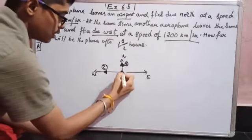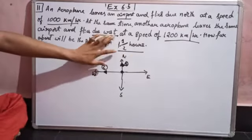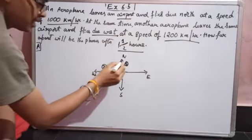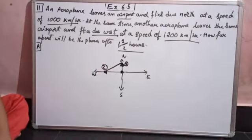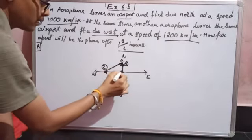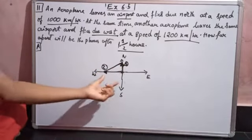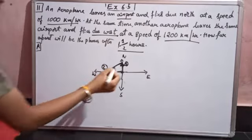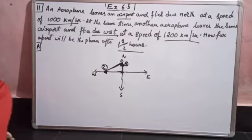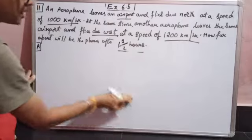After one and a half hours, the actual distance between the two planes is nothing but the hypotenuse of the right triangle formed. Since I have the speed of the airplanes, I need to find the distance traveled by each plane after one and a half hours, and then I can find the hypotenuse.